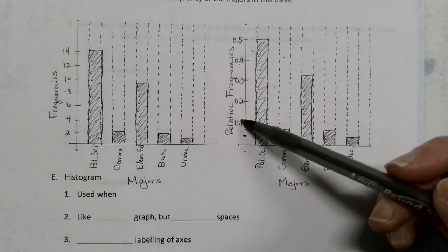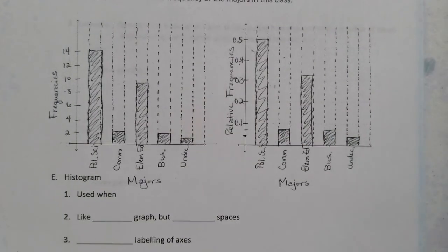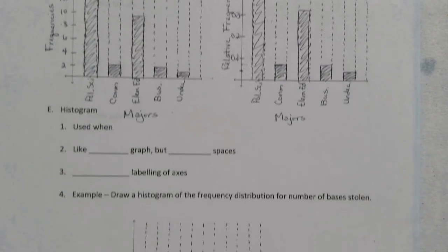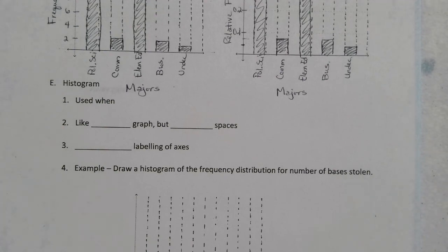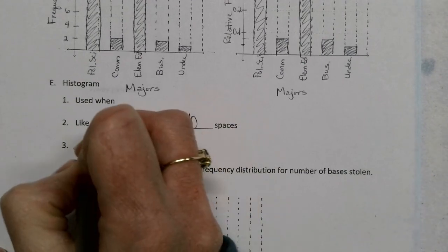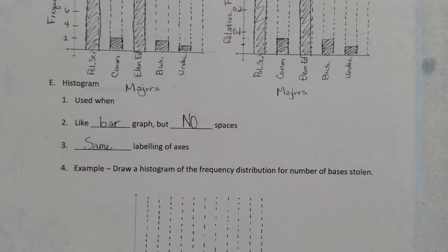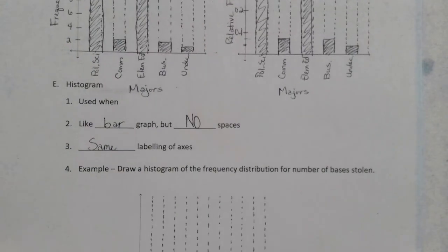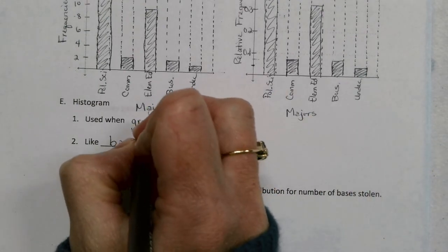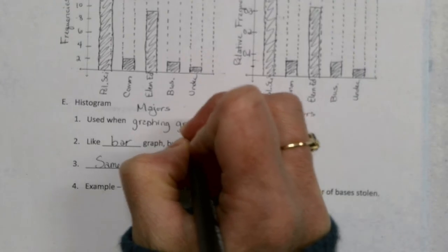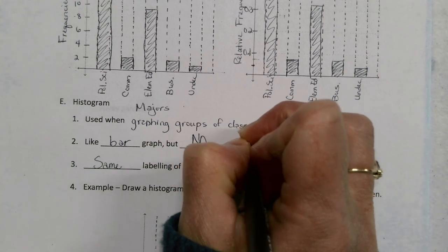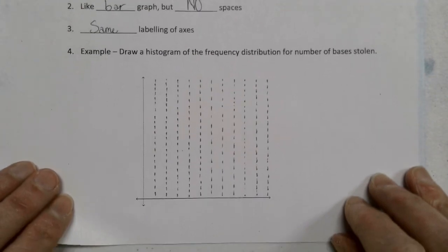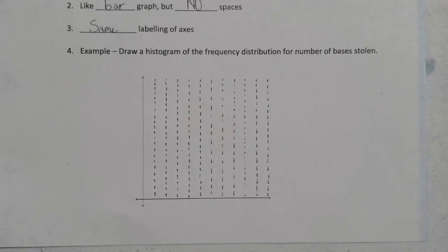Now there is another way to display this information, very similar to a bar graph, and it's called a histogram. Your histogram is like that bar graph, but the difference is there are no spaces between those bars. The labeling of the axes is the same — the horizontal axis still shows the classes, and the vertical axis still shows the frequencies or relative frequencies. But your histogram is often used when you're graphing groups of classes instead of individual pieces of data.